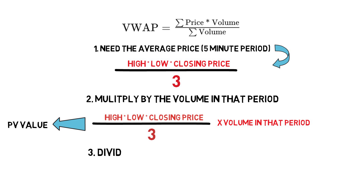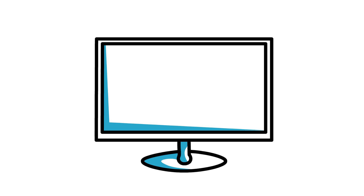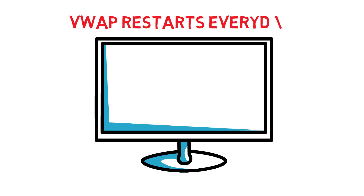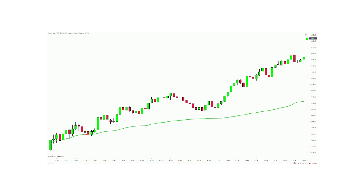Congratulations! To maintain the VWAP value throughout the day, continue to add the PV value from each period to the prior values. Divide this total by the total volume up to that point. To make this easier in a spreadsheet, create columns for the cumulative PV and the cumulative volume — both these cumulative values are divided by each other to produce the VWAP. Thankfully, any decent trading platform will have VWAP benchmarks that do this all for you — no need for this painstaking math. But understanding this math will help you realize the strengths and weaknesses of this benchmark.